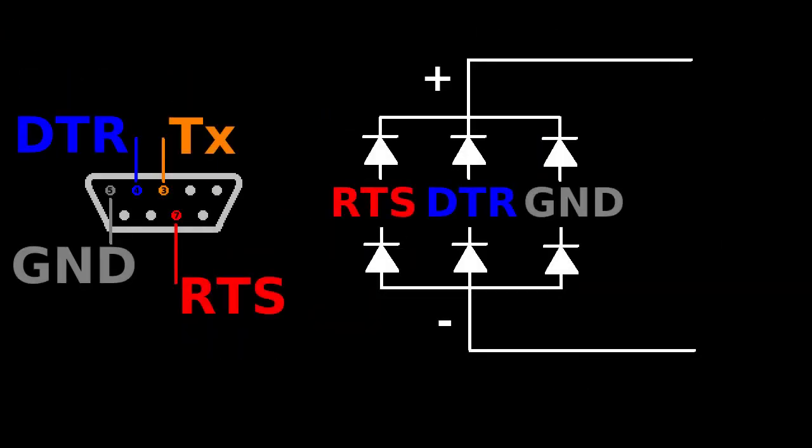For this to work, we're going to build a rectifier circuit, similar to what is used for the full bridge rectifier that converts AC to DC. But now we have three cables—RTS, DTR, and ground—so the circuit looks like this.